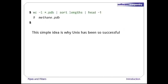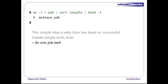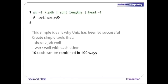This simple idea is why Unix has been so successful. Instead of creating enormous programs that try to do many different things, Unix programmers focus on creating lots of simple tools that each do one job well and work well with each other. Ten such tools can be combined in a hundred ways, and that's only looking at pairings. When we start to look at pipes with multiple stages, the possibilities are almost endless.